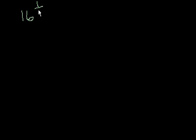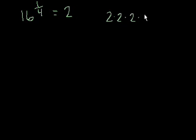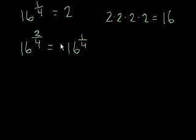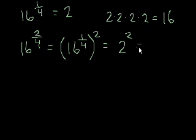So you know at this point that 16 to the 1 fourth power — think about what that is. That means some number to the fourth power is 16. If you've been practicing your level 1 exponents, you'll know that equals 2, because 2 times 2 times 2 times 2 equals 16. So 16 to the 1 fourth is equal to 2. Now, what do you think 16 to the 2 fourths is equal to? We already know that's the same thing as 16 to the 1 fourth, squared. We know 16 to the 1 fourth is 2, so that equals 2 squared, which equals 4.